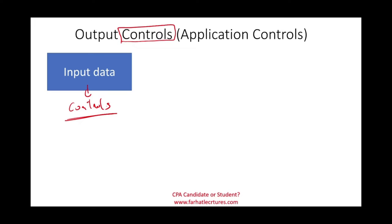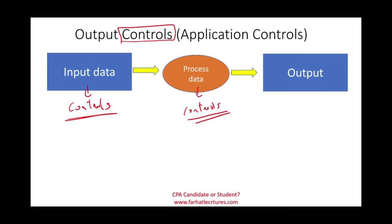But let's assume the input controls failed. Now the data is being processed. When we process the data, we also have controls about processing the data. We talked about those controls in the prior session - they're called processing controls. Once the data has been processed, now we have output. The output is usually a report or summary - some sort of data we are producing in the form of financial statements, a list of items, a job order costing report, a process costing report, and so forth.